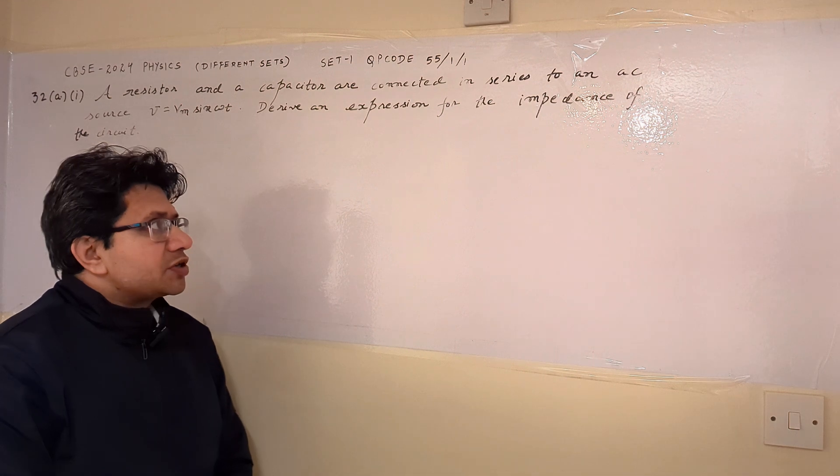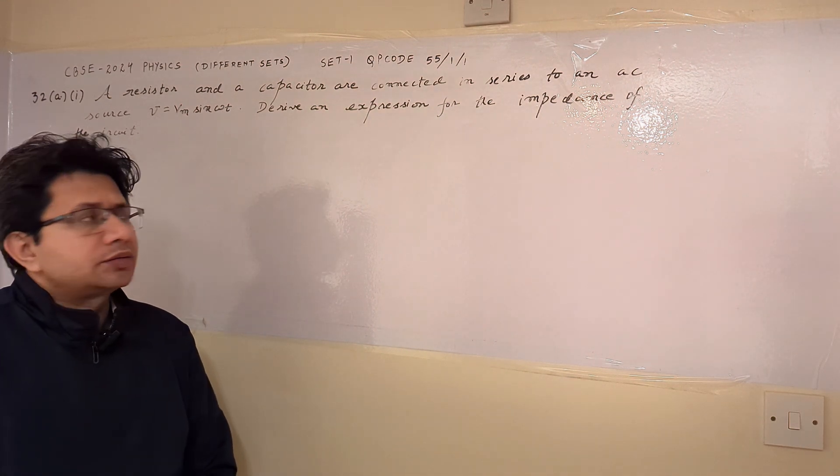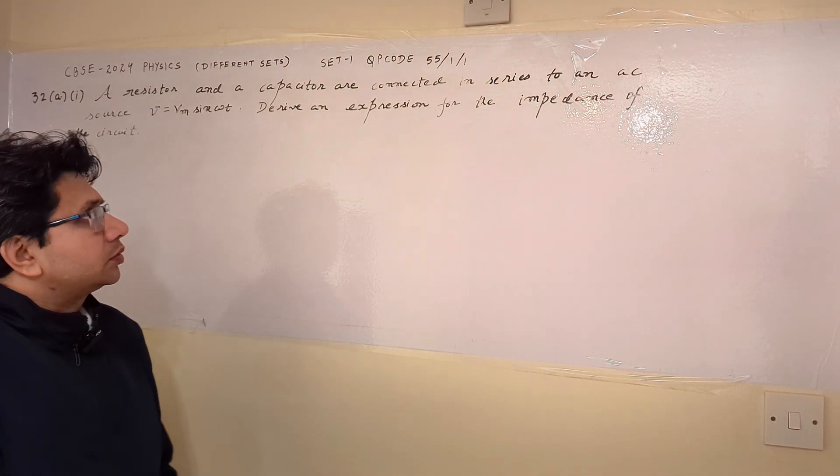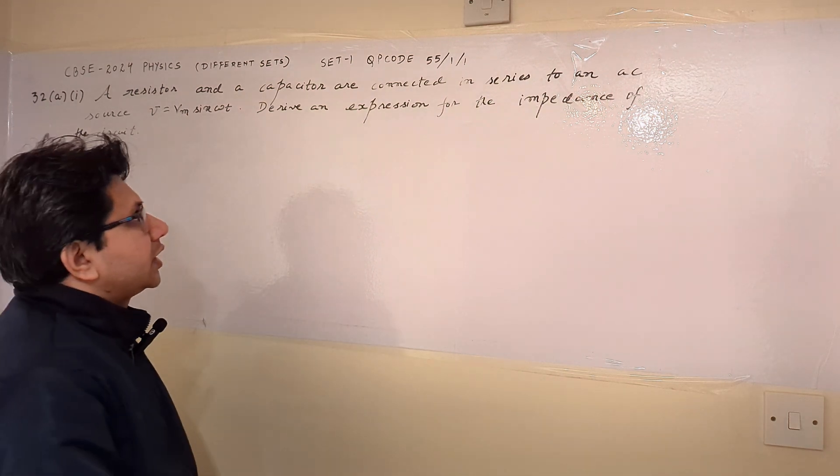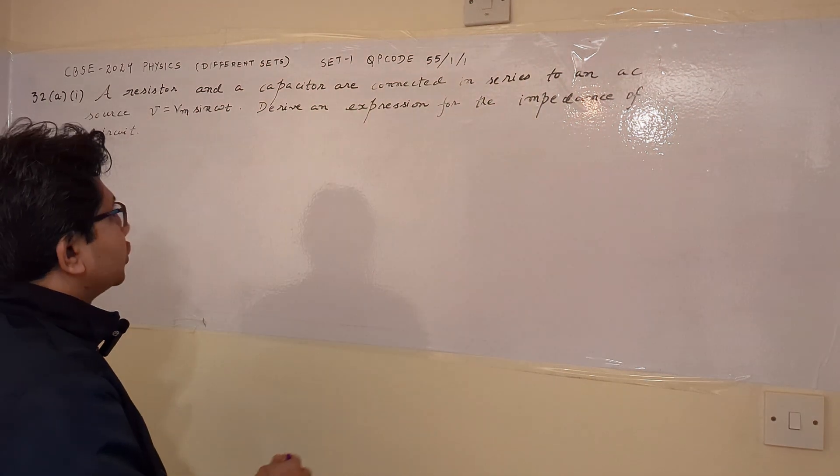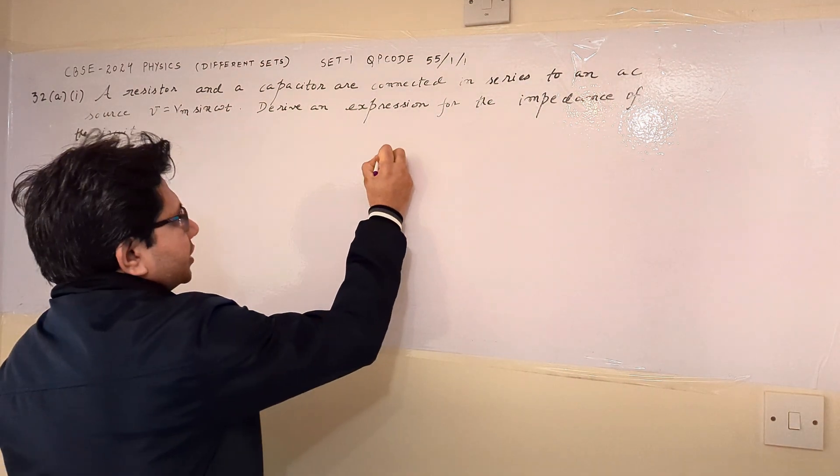So the problem is based on the topic alternating current and in this particular problem, we have to derive an expression for the impedance of RC circuit, series RC circuit.